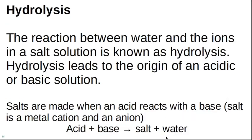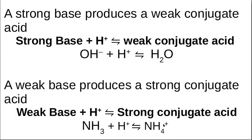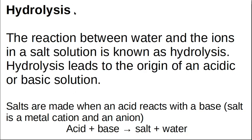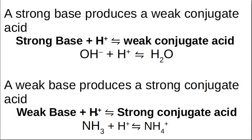Now we're going to talk about salts. Remember that a salt is formed when you mix an acid with a base, and a salt consists of a metal cation and an anion. We'll come back and look at the implications of whether those ions come from a strong or weak acid or base in their dissociation.